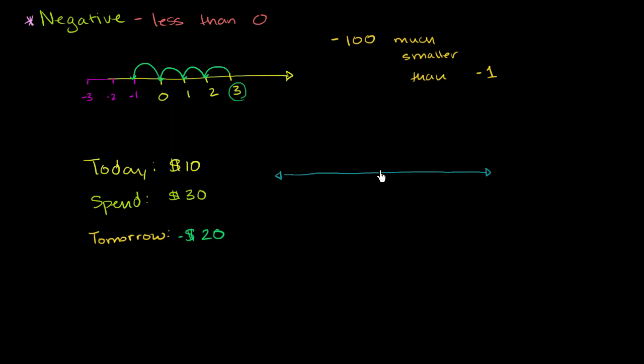And if we use the number line here, it should hopefully make a little bit of sense. So that is 0. I'm starting off with $10. And spending $30 means I'm moving 30 spaces to the left. So if I move 10 spaces to the left, if I only spend $10, I'll be back at 0. If I spend another $10, I'll be at negative 10. If I spend another $10 after that, I will be at negative 20.